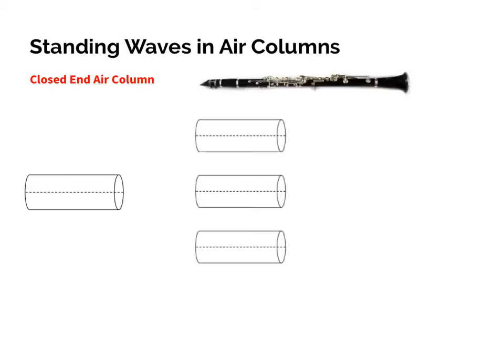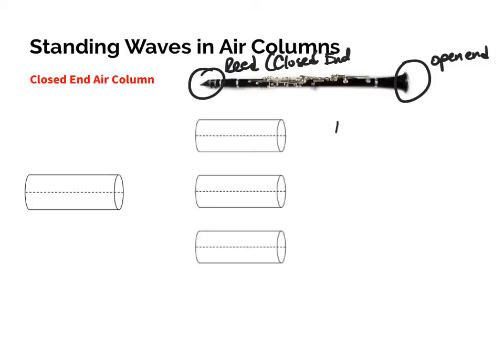For those playing woodwind instruments that use a reed — a reed is technically a closed end, but the other end is still open. So instead of two open ends, you have a closed end and an open end. The difference is that at the closed end you have a node, and at the open end you have an antinode.